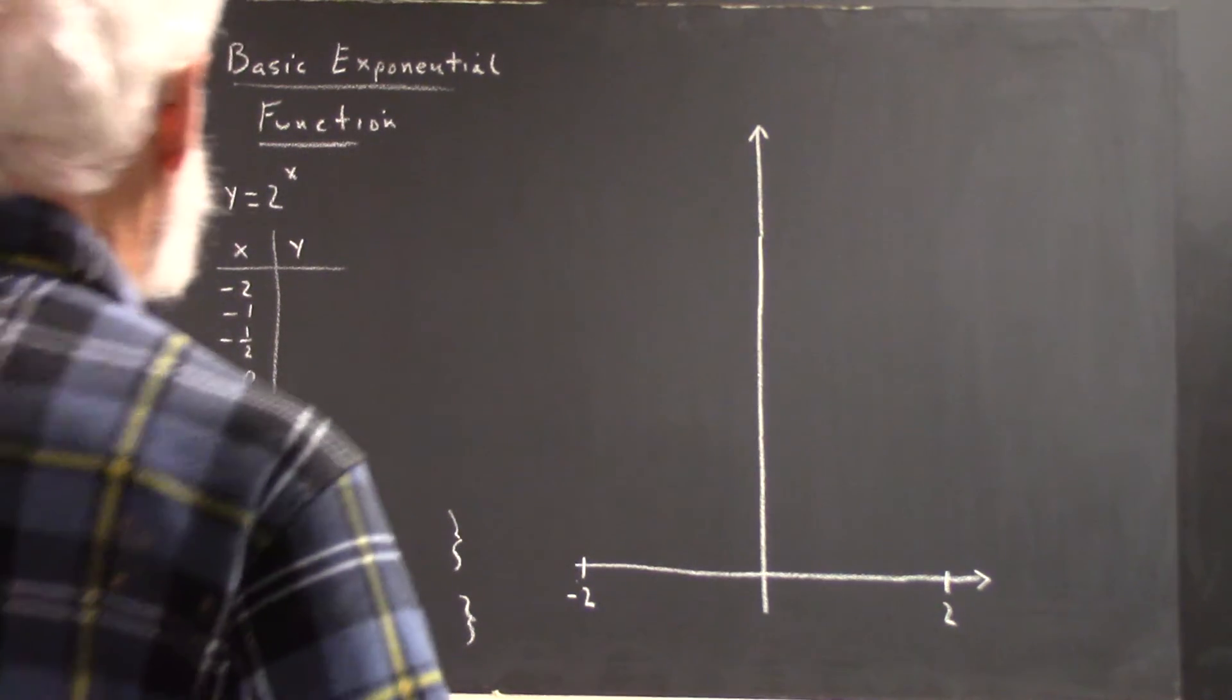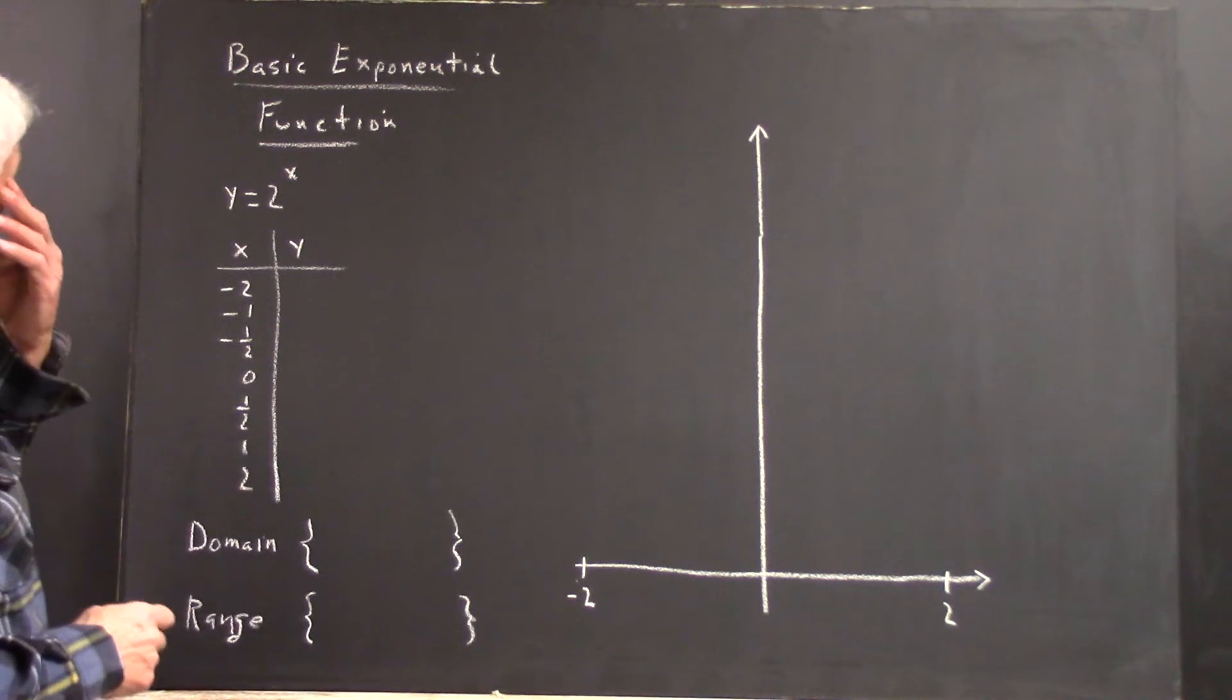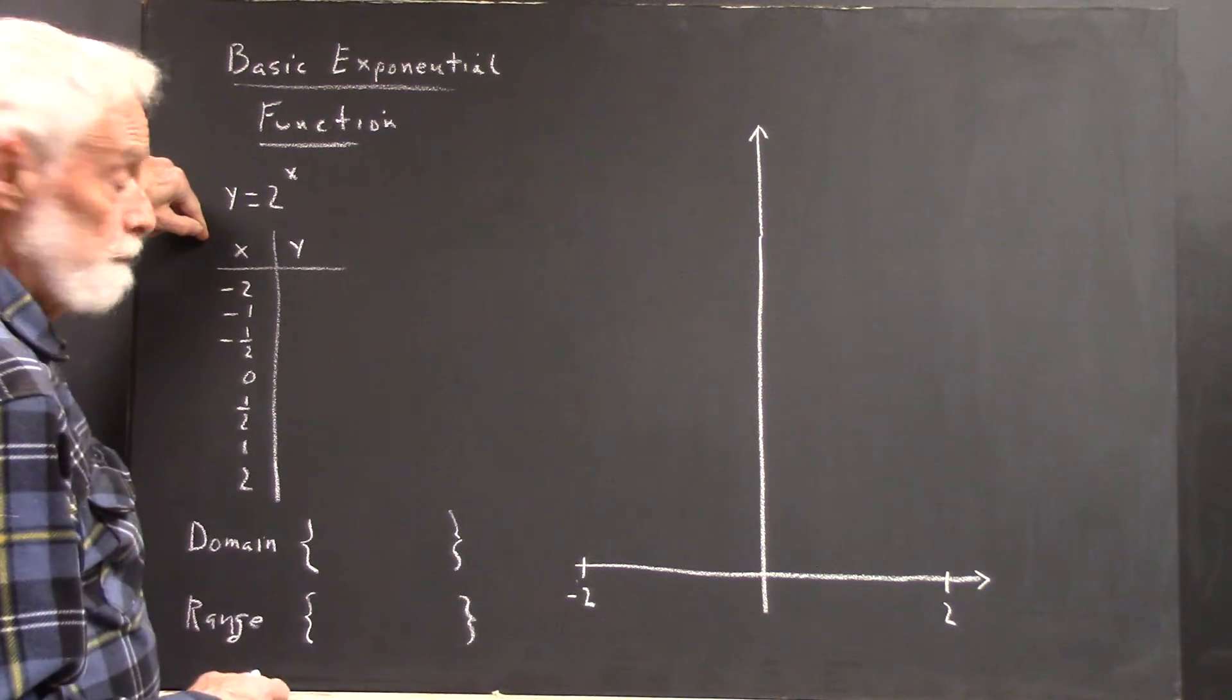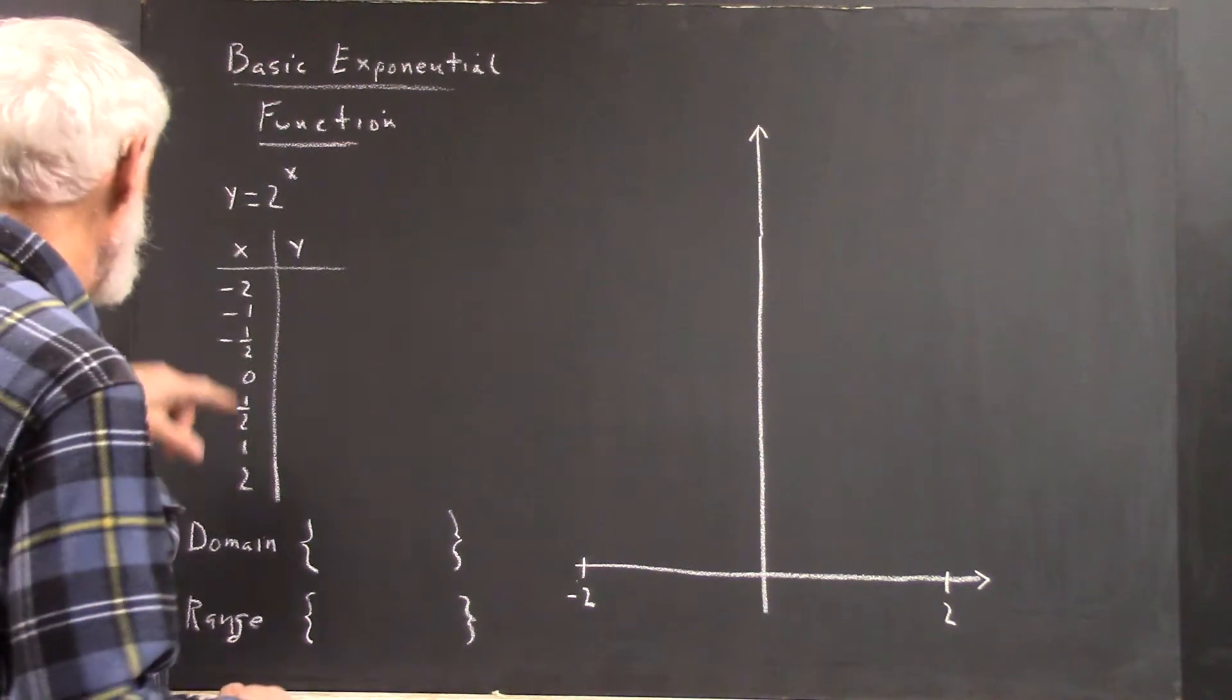Taking a quick look at the basic exponential function, which has been explained elsewhere, so I'll explain fairly quickly. We have the function y equals 2 to the x. That's your basic exponential function.